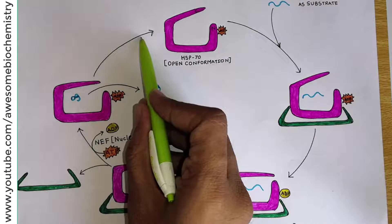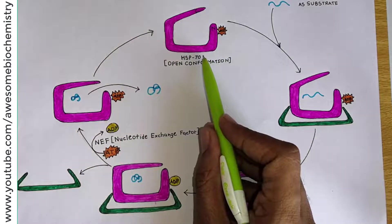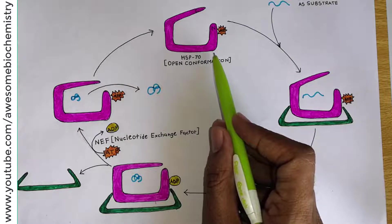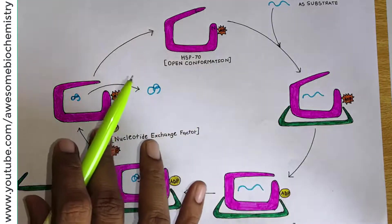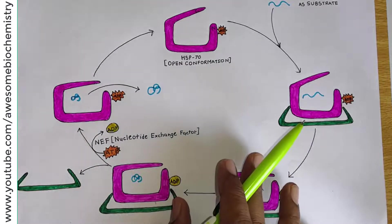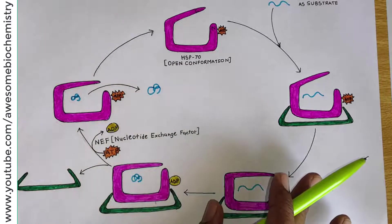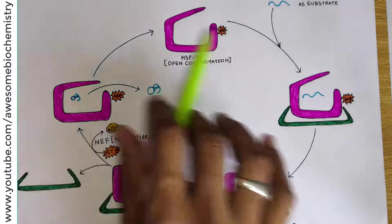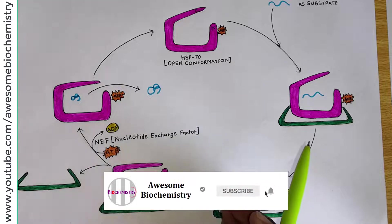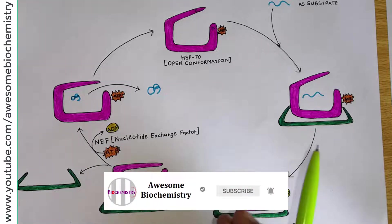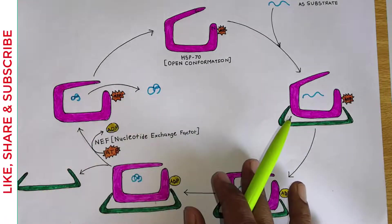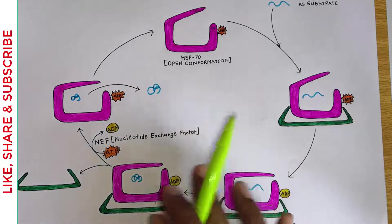Now again, this HSP70 is in the open conformation and it is ready to undergo a second cycle of protein folding. This mechanism of action of HSP70 is a very easy one. Whatever we discussed about these components is from the eukaryotic system. But remember, a similar system also occurs in prokaryotes, with the mechanism of action as well as structural components being almost identical.